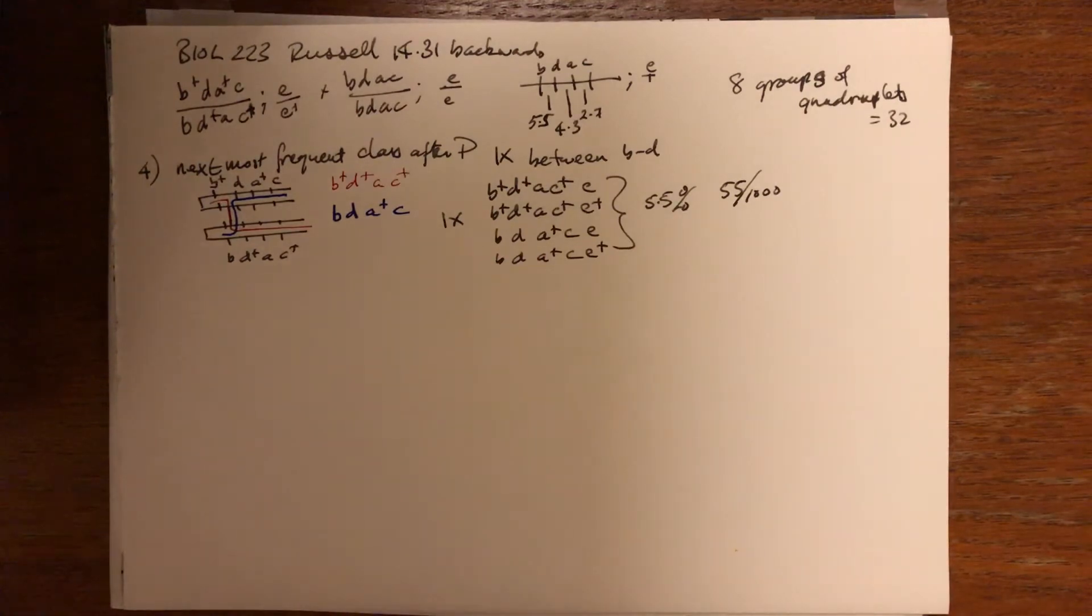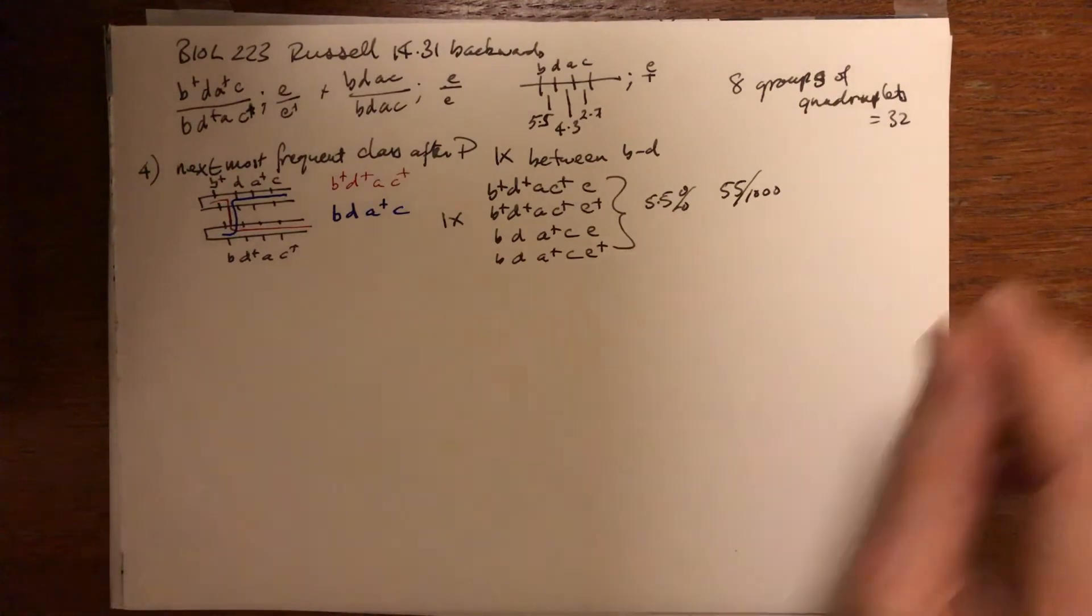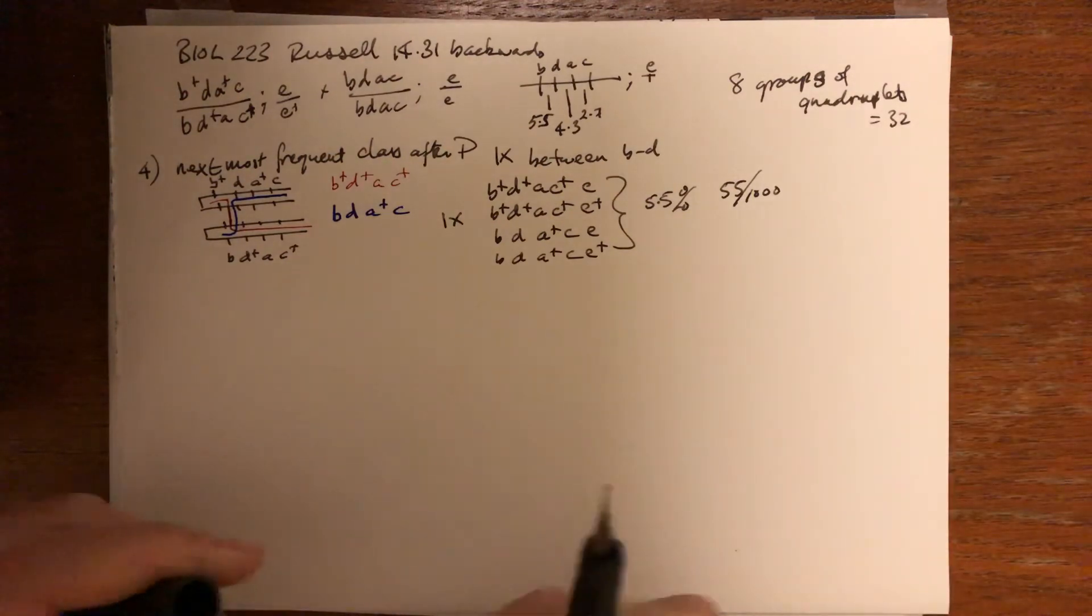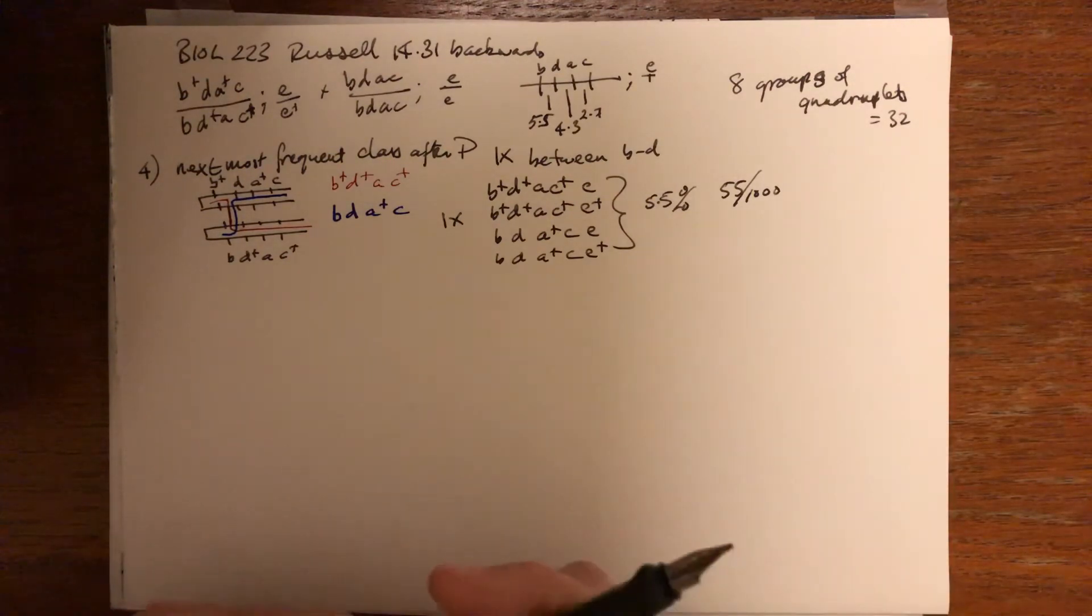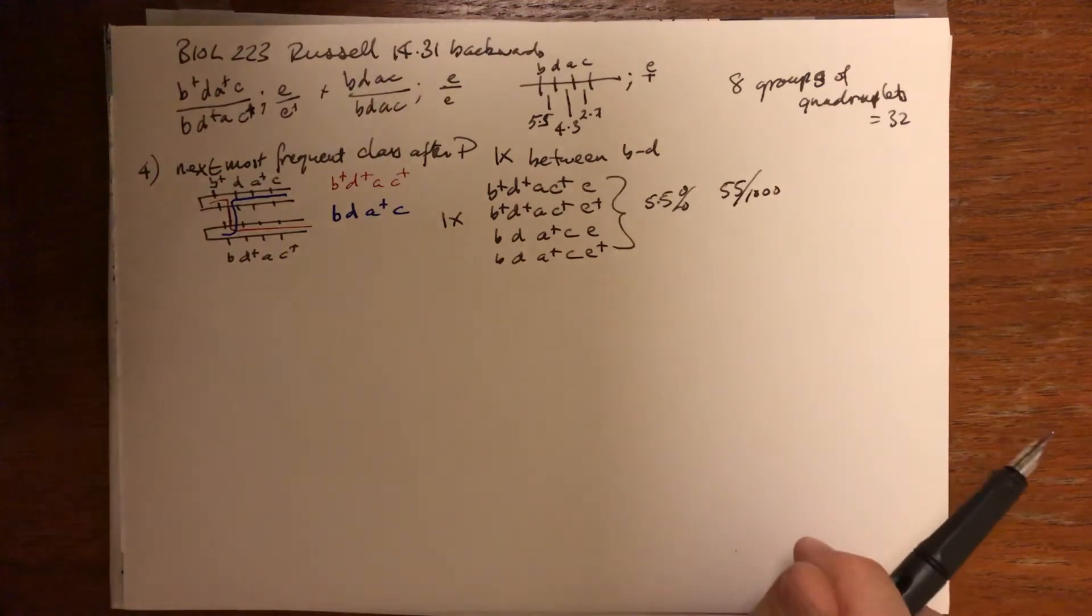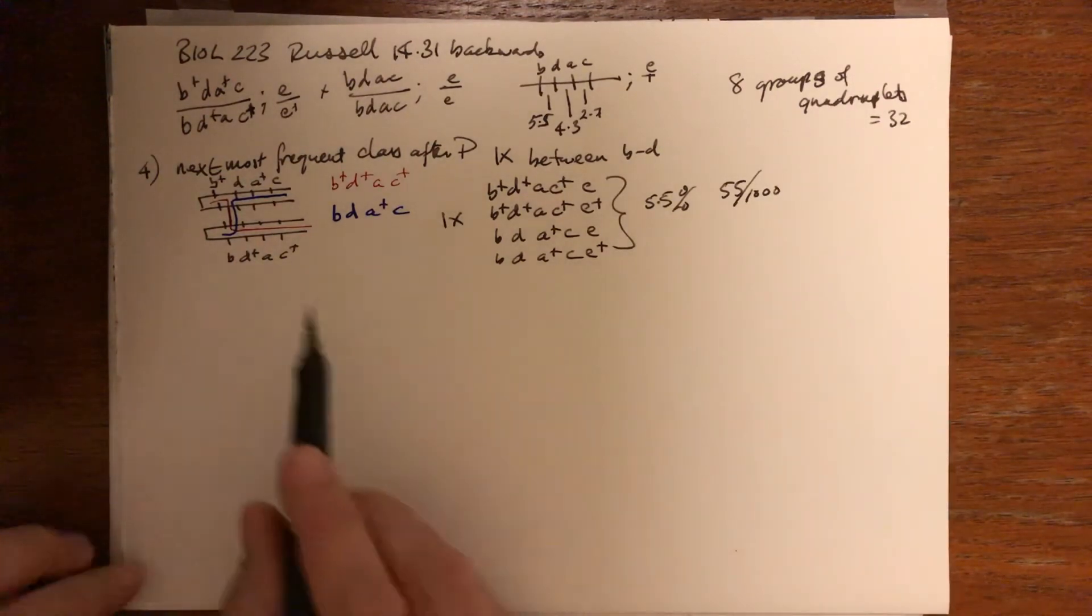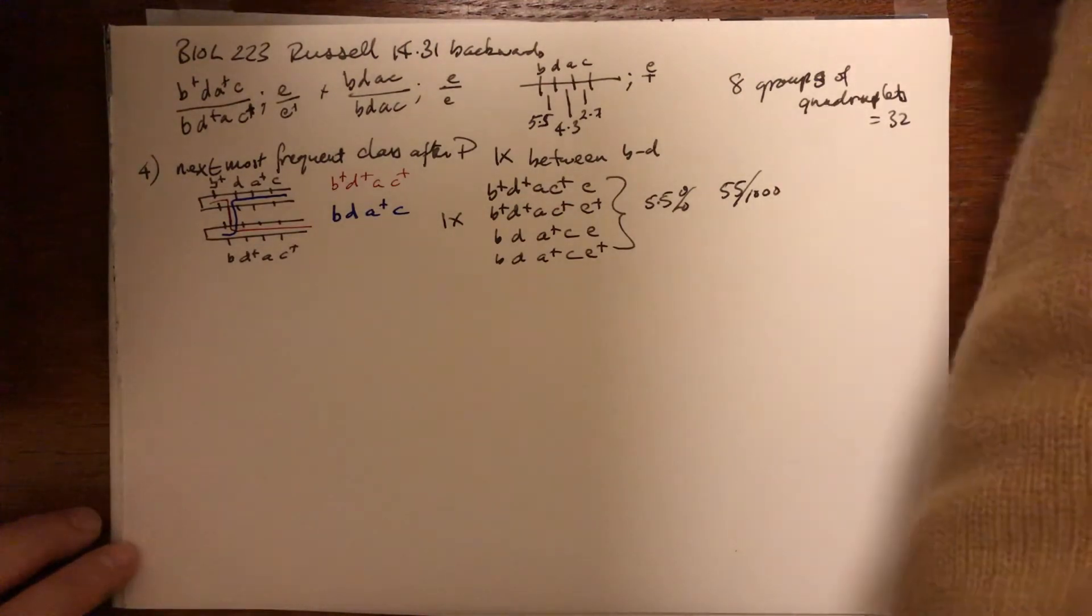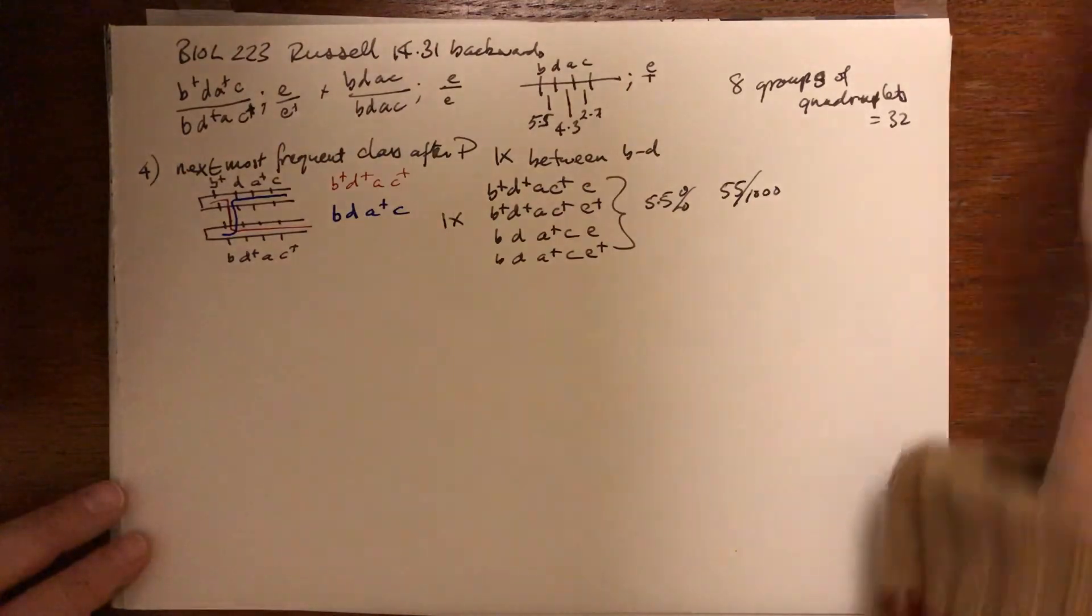So I don't agree with the emphasis you will often see on paying attention to double crossing over and calculating map distances. I think it's kind of silly, and it exists because it's a problem that can be asked.